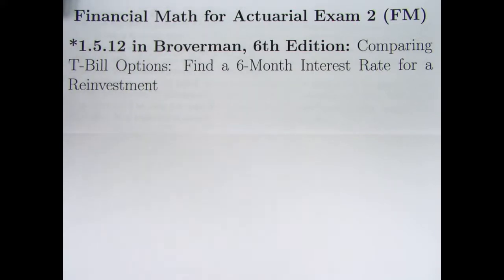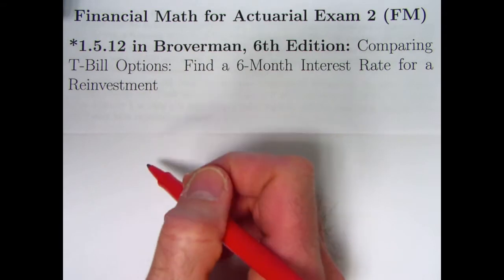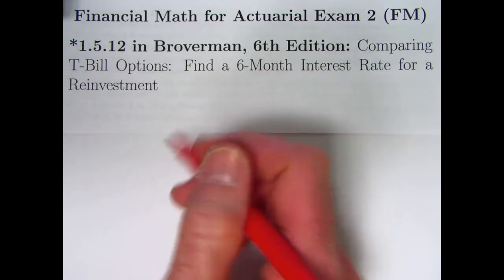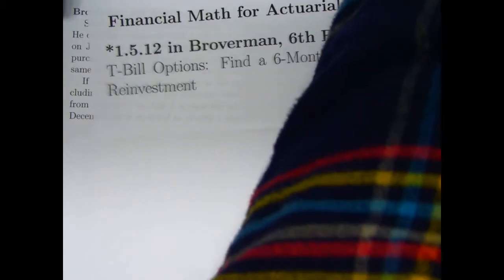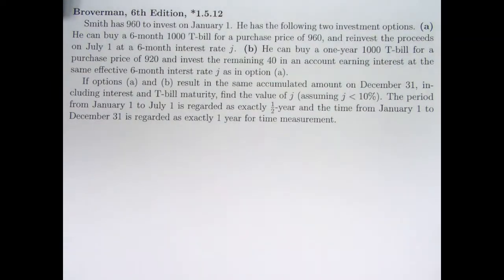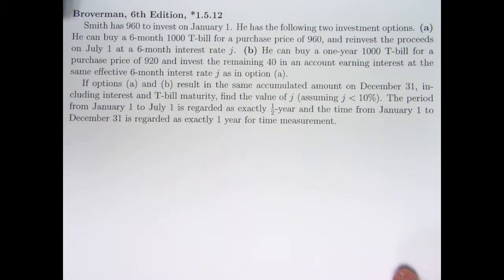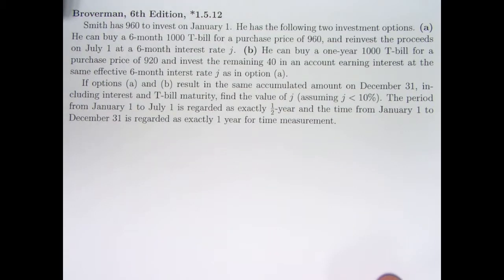In this video we're taking a look at a starred problem 1.5.12 from the sixth edition of Broverman. Comparing T-bill options, finding a six-month interest rate for a reinvestment. As you can see the problem itself looks pretty long. It's actually not as difficult as you might imagine for how long it is. The main thing is just getting your mind around what's going on here.